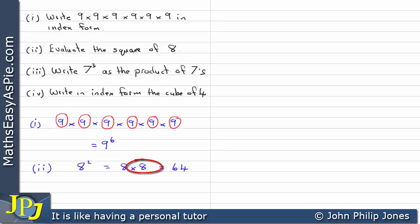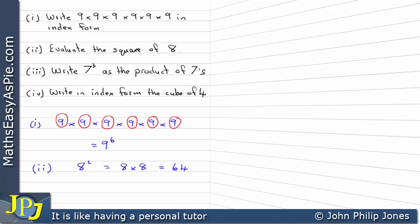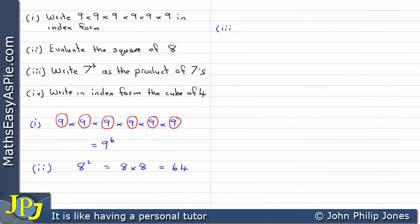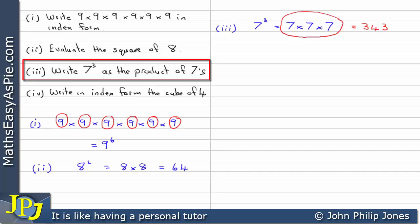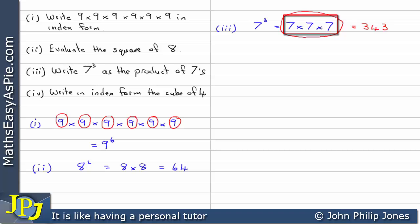Let's have a go at the third example: write 7 to the 3 as a product of 7's. So 7 to the 3 is 7 to the index of 3, which is 7 times 7 times 7. The answer I've circled is 7 times 7 times 7, because the question asks to write 7 to the 3 as a product of 7's — and that is clearly the product of 7's. What we've been dealing with here is 7 cubed.